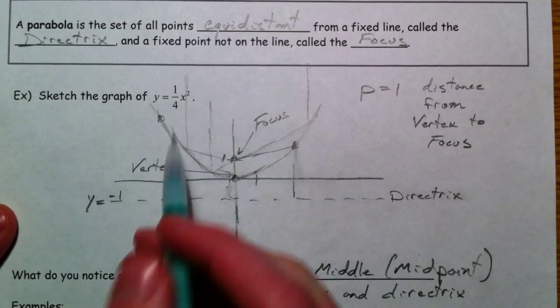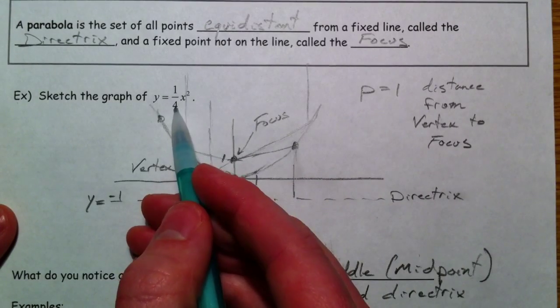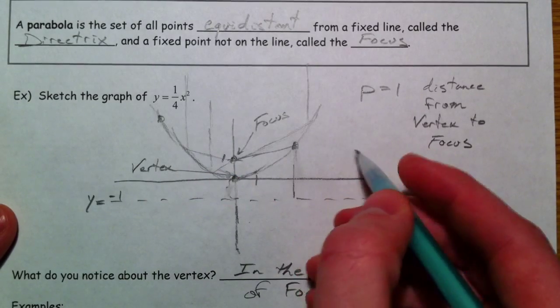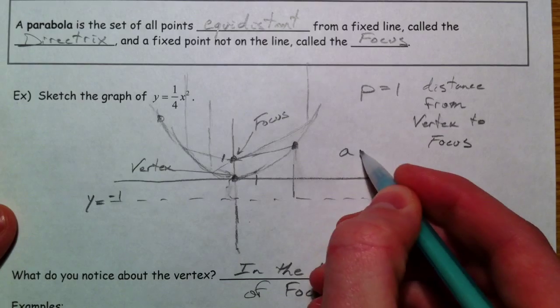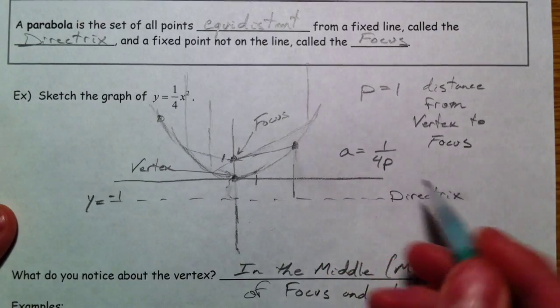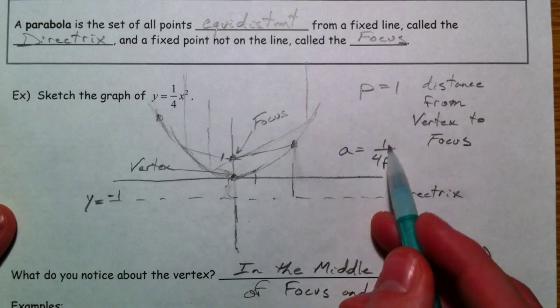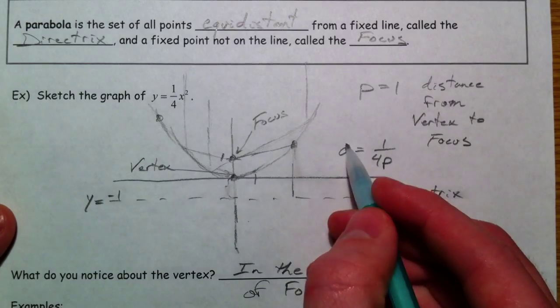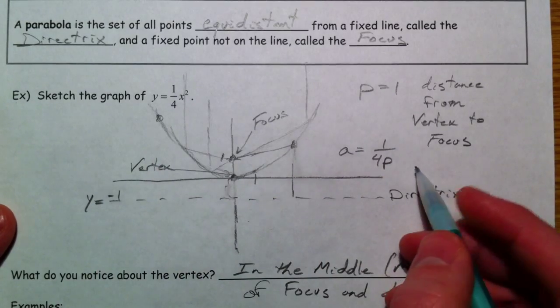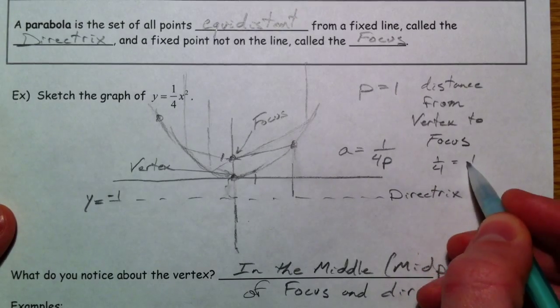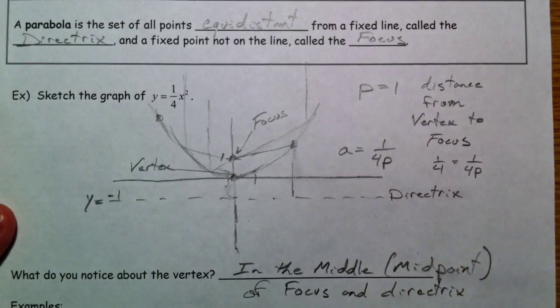And so in this case, how would we get the 1 fourth? Our a value that's in our equation is equal to 1 over 4p. And so p is equal to 1, and so a is 1 fourth. You can multiply by that. If a is equal to 1 fourth, it's 1 fourth equals 1 over 4p. So p has to be the 1.